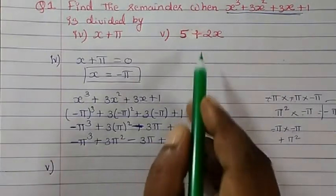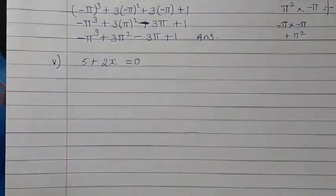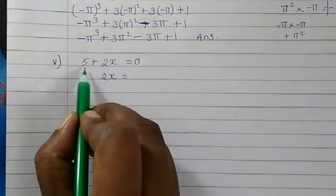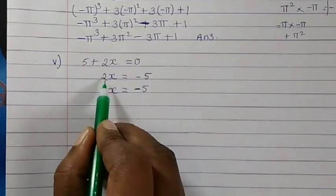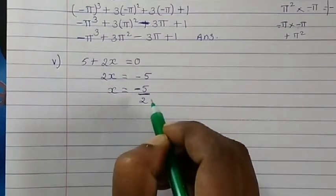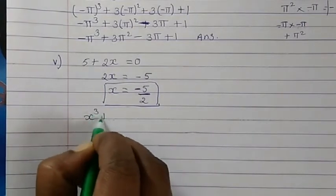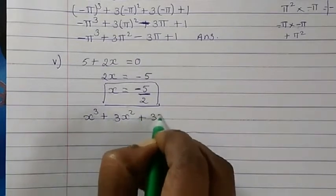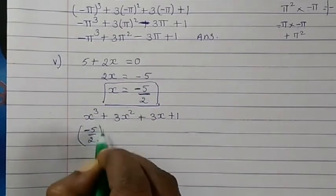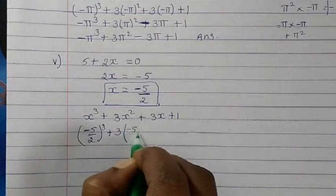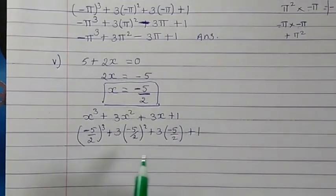Now let's do the 5th one. The 5th divisor is 5 + 2x. We set 5 + 2x = 0. We want the x value, so we keep 2x on one side. The 5 comes to the other side and becomes minus 5. The 2 is in multiplication, so when it comes to the other side it becomes division. So x = -5/2 is our x value. We apply this in x³ + 3x² + 3x + 1: (-5/2)³ + 3(-5/2)² + 3(-5/2) + 1.